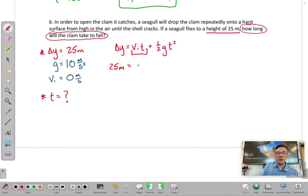So 25 meters is equal to the initial velocity of the clam was zero. So anything times zero, the time multiplied by zero is zero. So we can put zero in there.